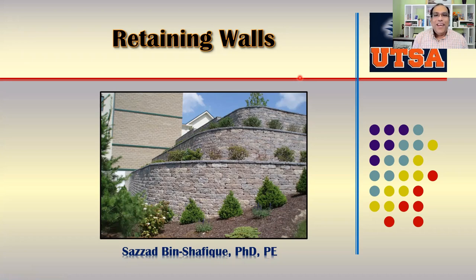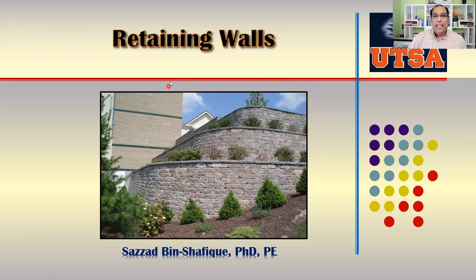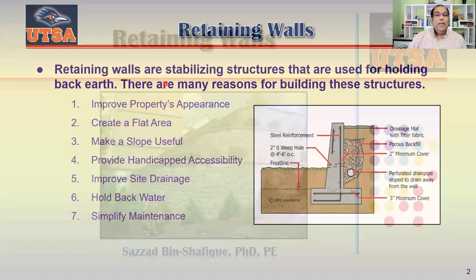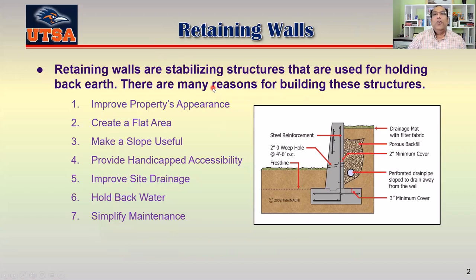We are at the title page of our presentation, which is retaining walls. You can see a picture here showing retaining walls in three different stages — we are trying to hold the soil so that it can't fall down. So that's the basic idea: to hold soil. Retaining structures are basically to hold soil, and there are many reasons for that — to improve property appearances, sometimes to create a flat area, make a slope useful, provide handicap accessibility, and improve site drainage.